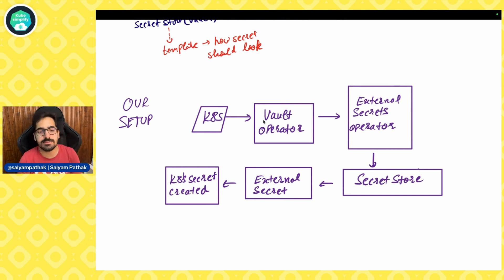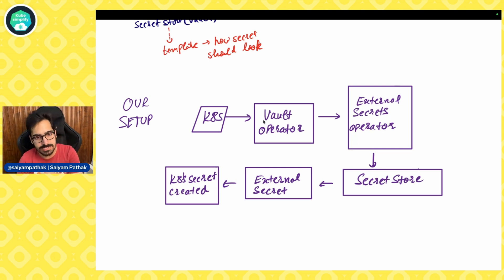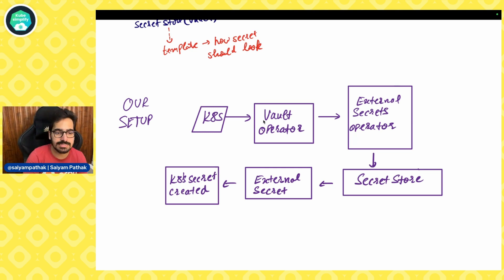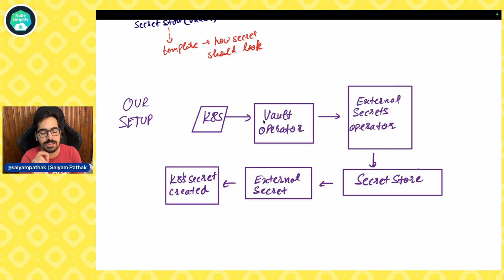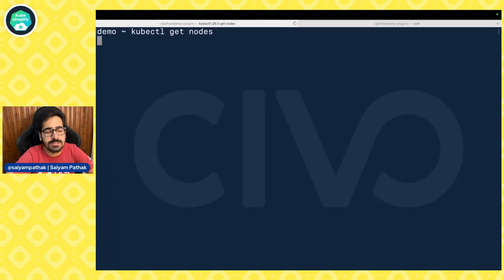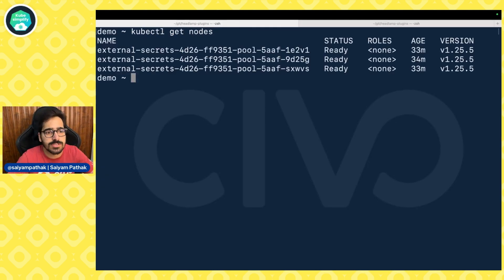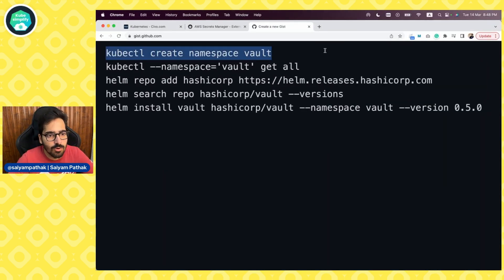We will now go through a complete setup to demonstrate what we just discussed. First we have Kubernetes, then we have the Vault operator installed, then we install the External Secrets Operator, we create the Secret Store, we create the External Secret, and we see how after the External Secret creation a secret is created by fetching it from Vault, with sync happening between them. I already have a Kubernetes cluster up and running — kubectl get nodes shows a three-node cluster. Now we'll first install Vault.